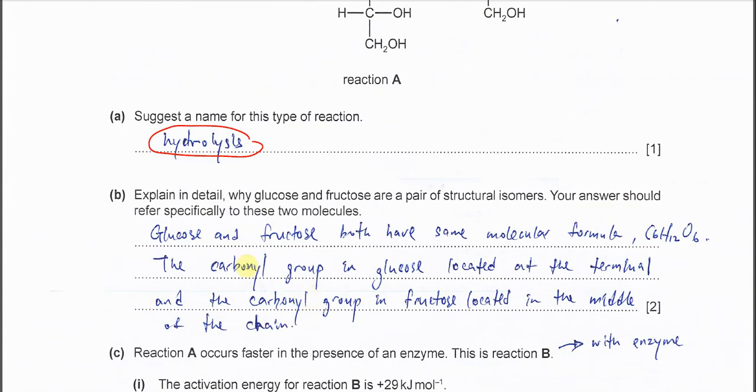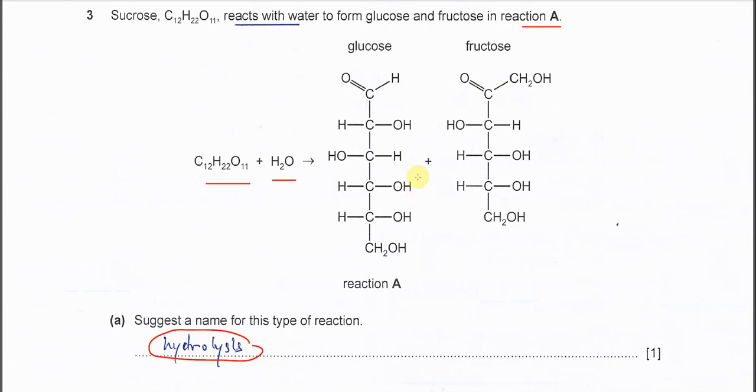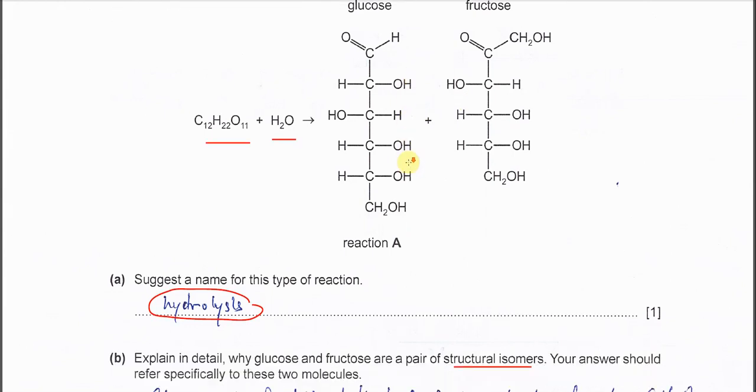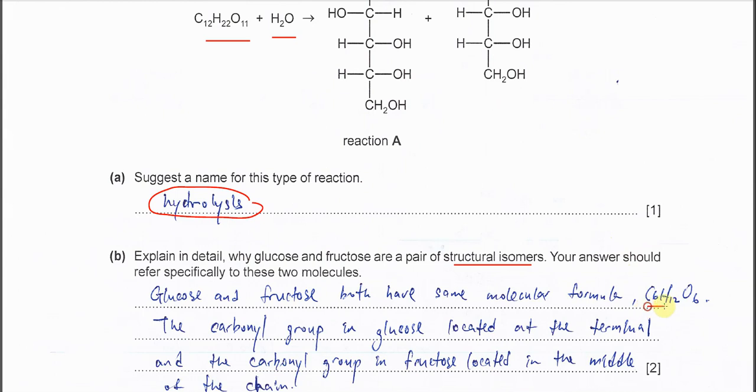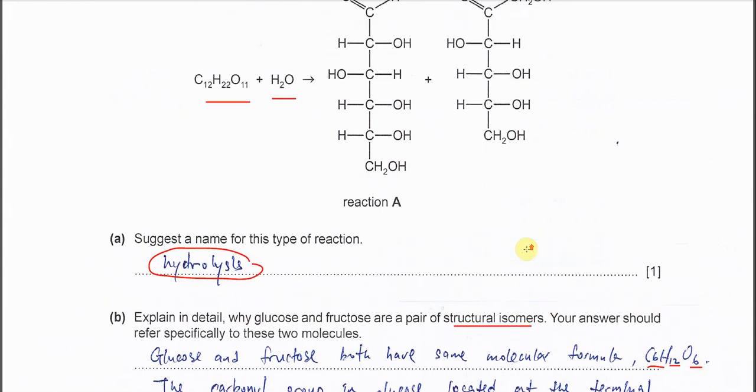Part B: explain in detail why glucose and fructose are a pair of structural isomers. Structural isomers must share the same molecular formula but their structure is different. We know that glucose and fructose have the same carbon number, hydrogen number, and oxygen number. Carbon number is 6, hydrogen number is 12, oxygen number is 6. The difference is what?